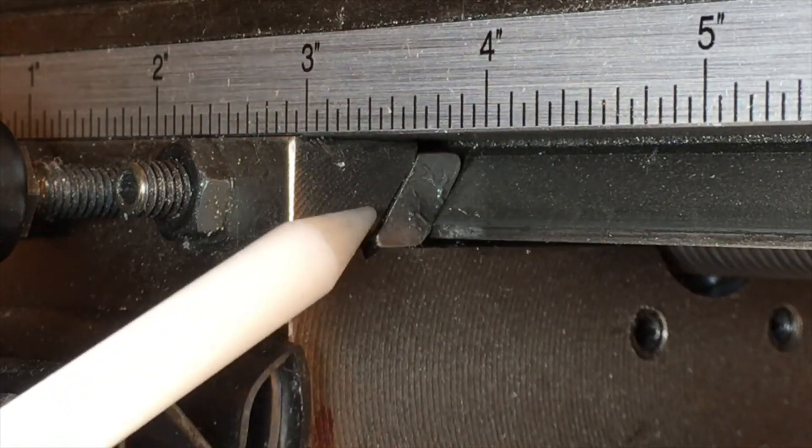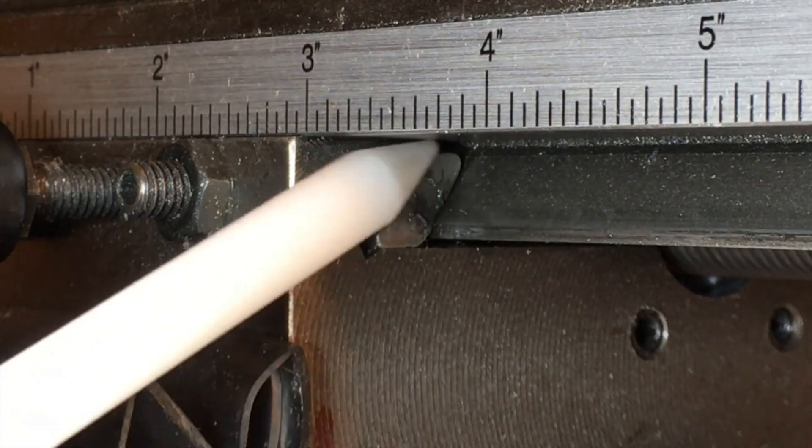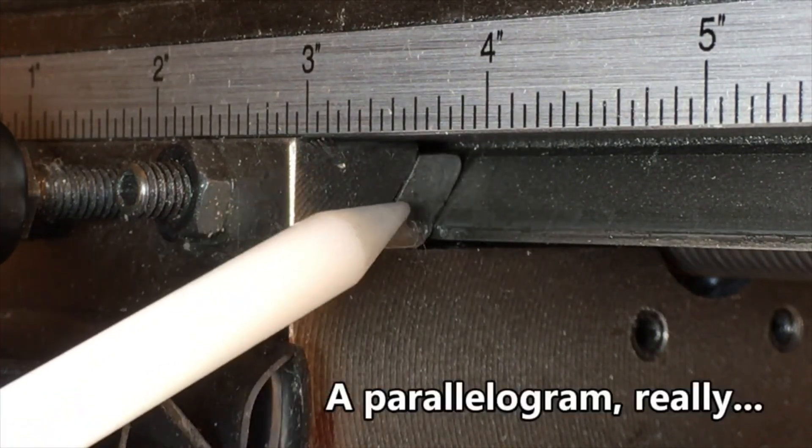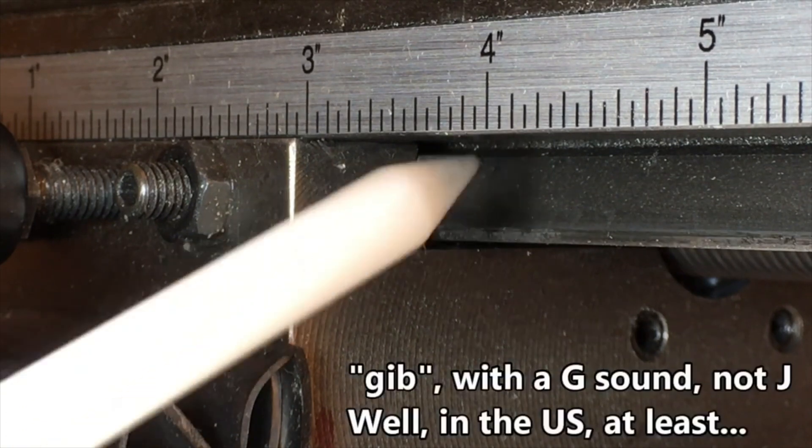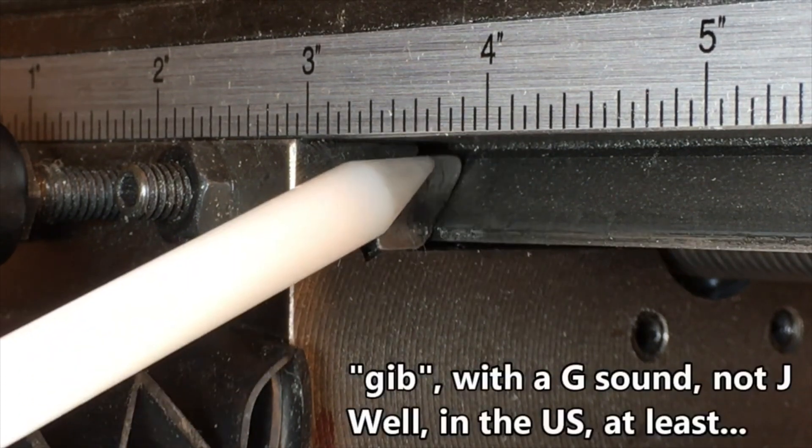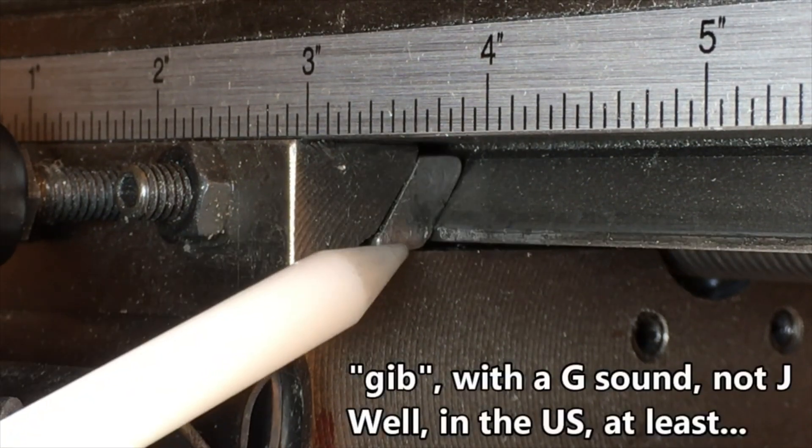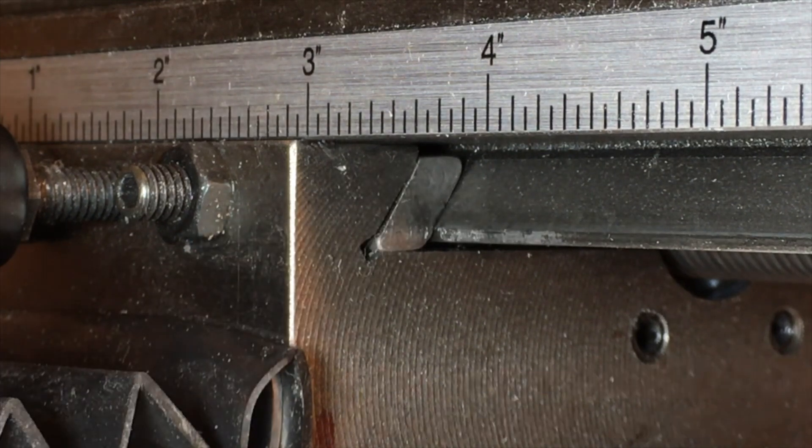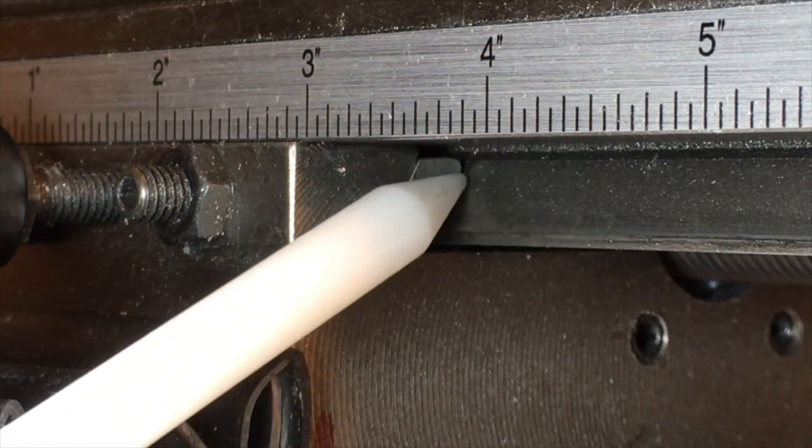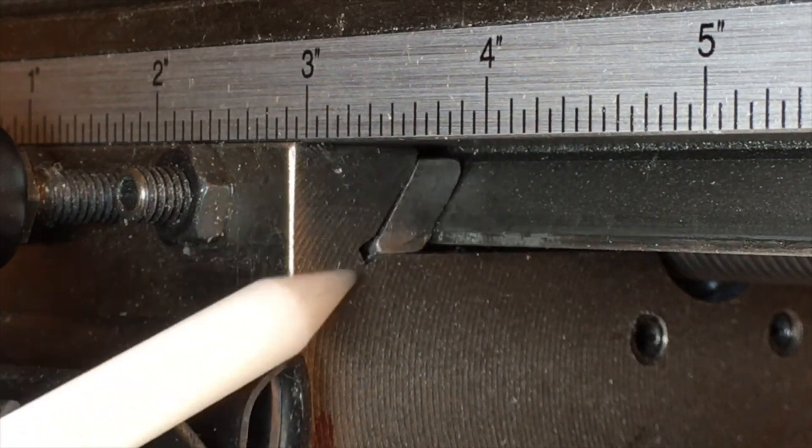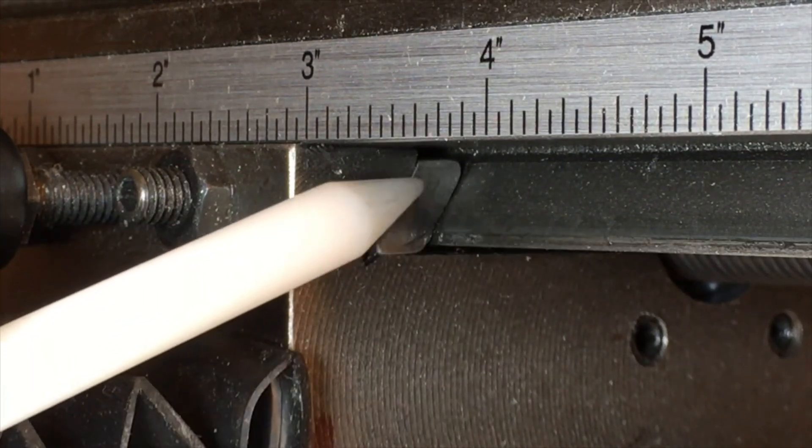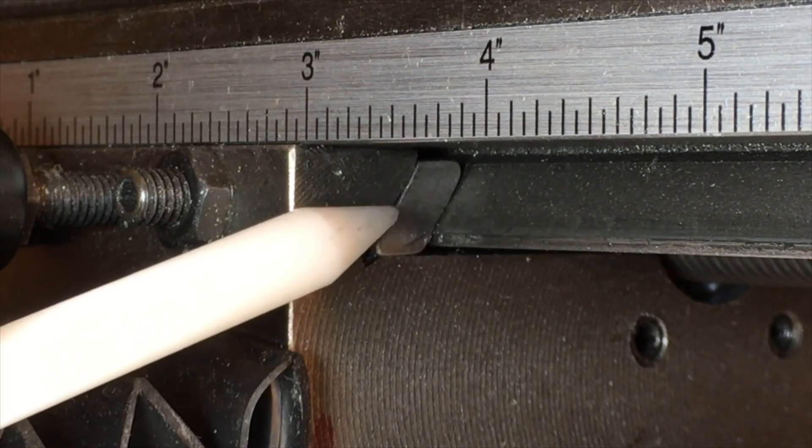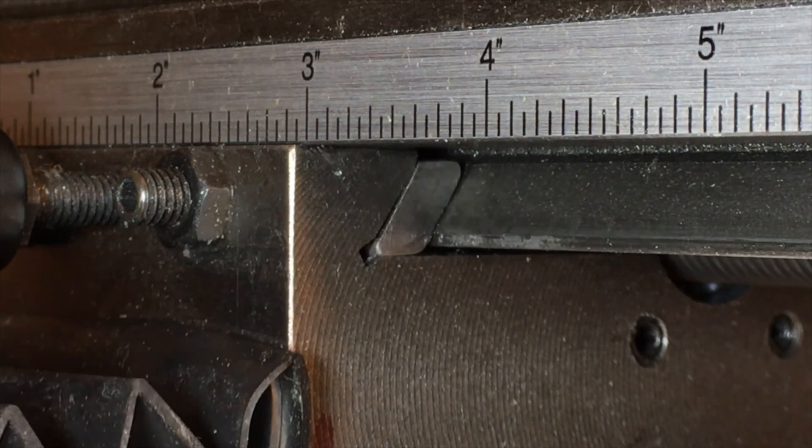Looking down below the table here, you can see the diamond-shaped cross section of the end of the x-axis gib. I often call it a gib strip because it is, in fact, a strip of metal about six inches long. It rides in between the two parts of the dovetail, and with the gib adjusting screws over here, you can adjust with some degree of precision the amount of clearance between the two sides of the dovetail.